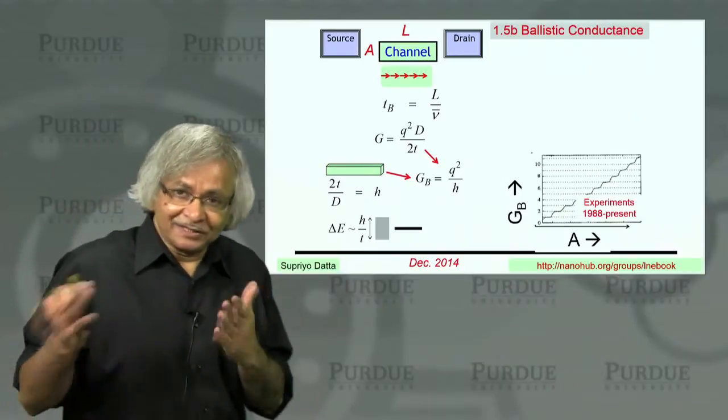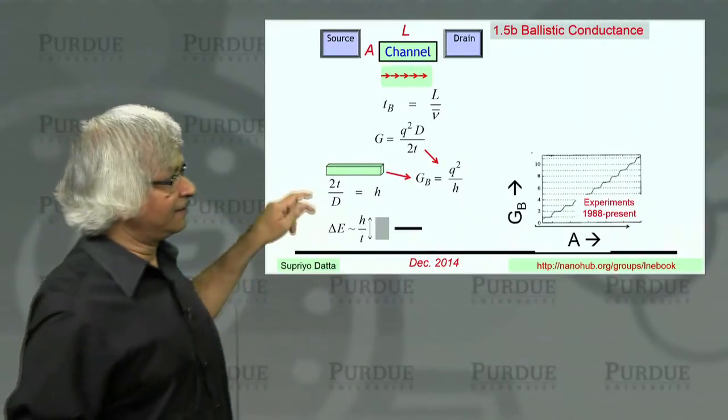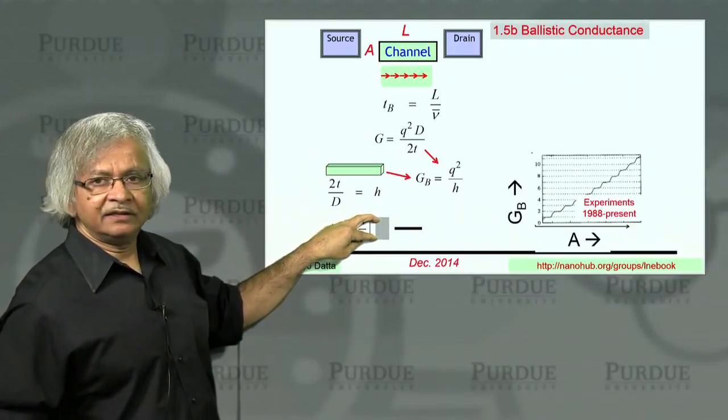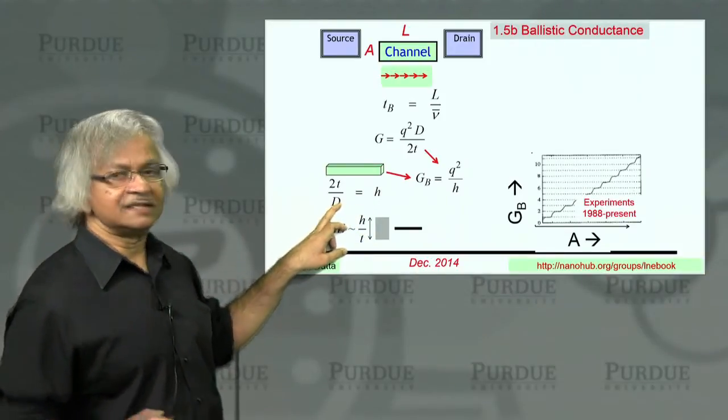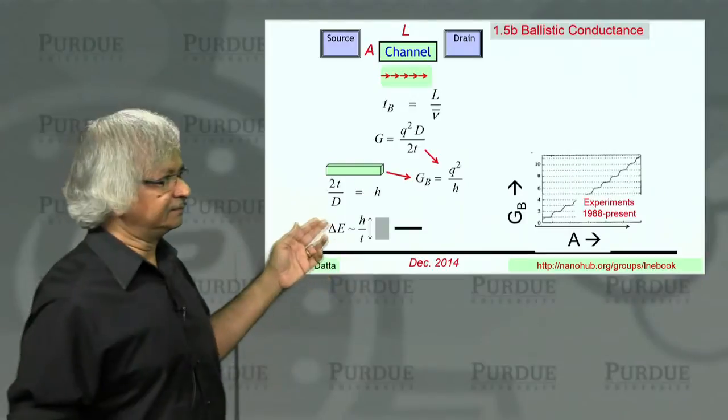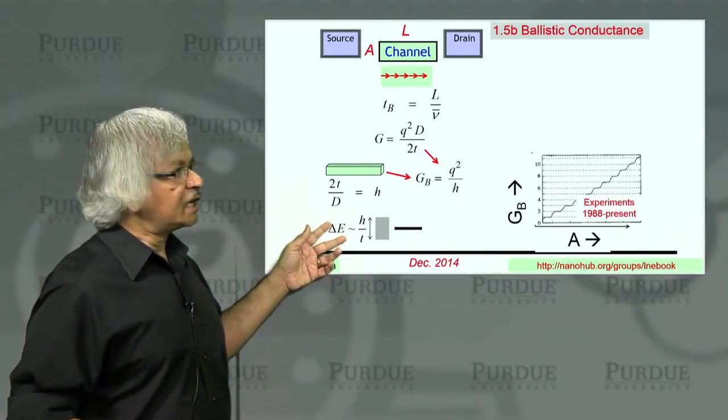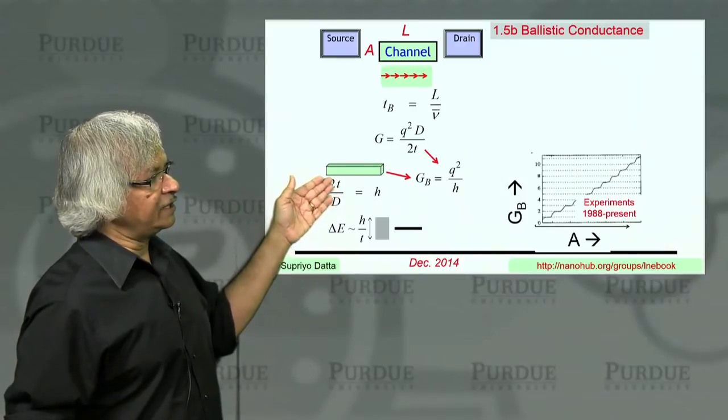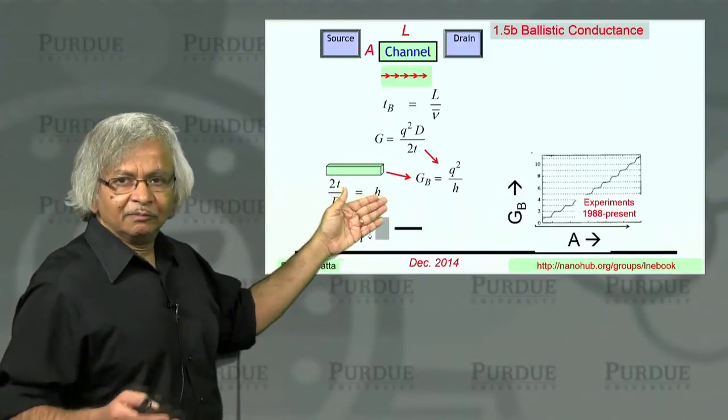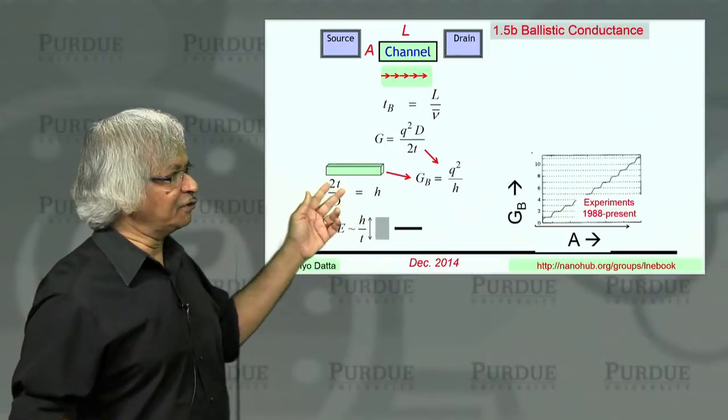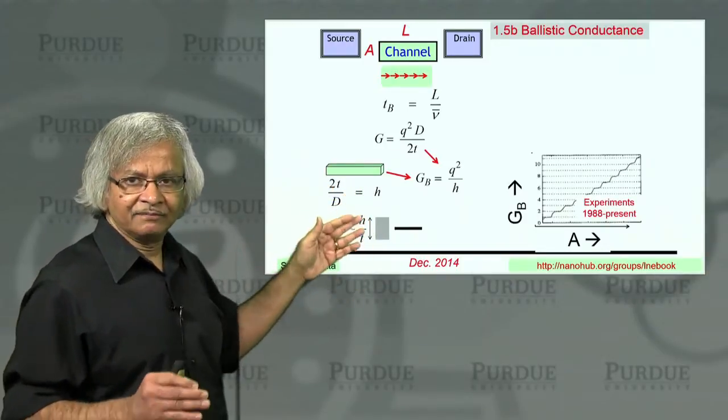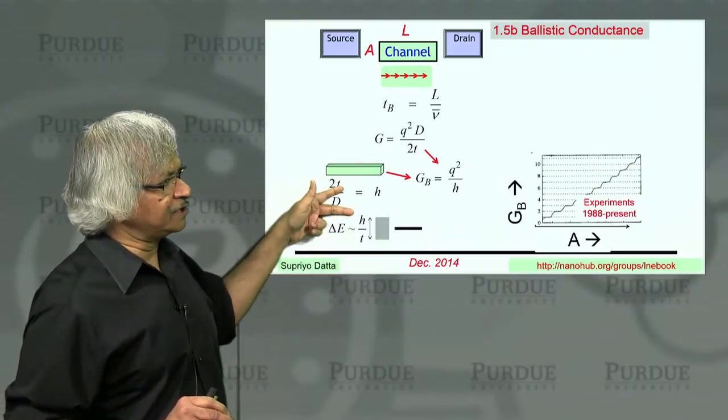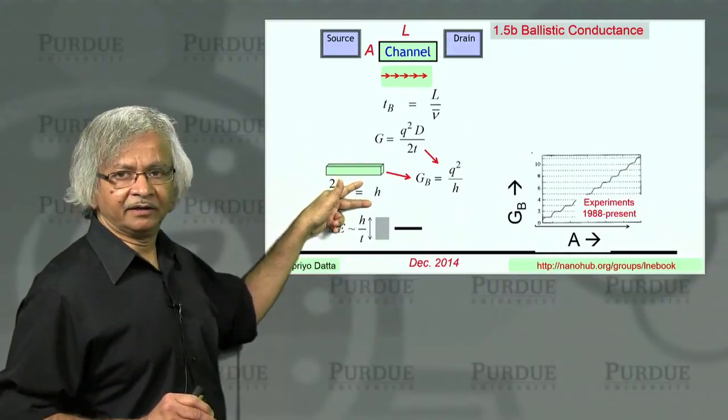That is, if an electron stays in that level for a length of time t, then the minimum broadening is h over t. That's like this uncertainty principle. And if the level is spread out over delta e, that means the density of states is like inverse of delta e. And so, from this uncertainty relation, you can kind of see why t over d might be proportional to h. Of course, you won't get a numerical factor out of a hand-waving argument like that. But you can kind of see why this has a fundamental limit there.